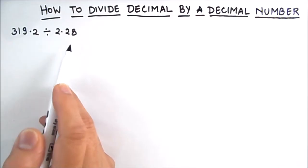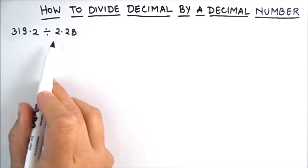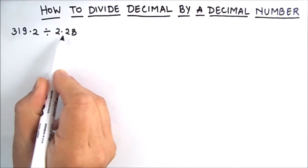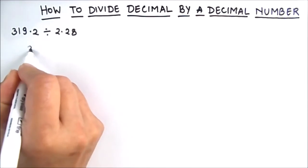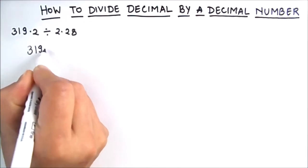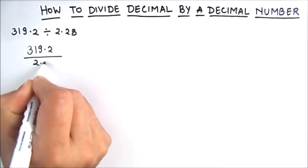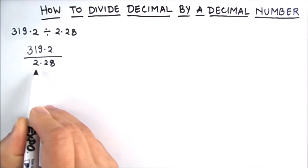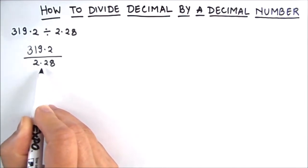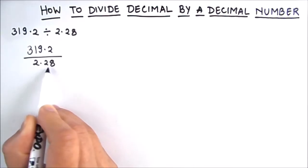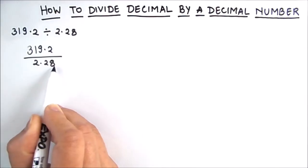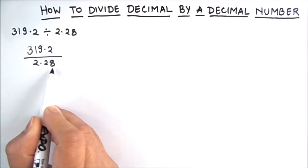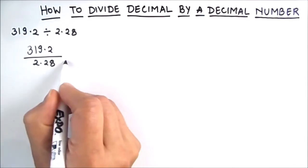The first step in dividing any decimal number by a decimal number is to remove the decimal from the divisor. Our divisor is 2.28, and we need to remove this decimal. To do that, we multiply it by 100, because there are two digits after the decimal point, making it 228.